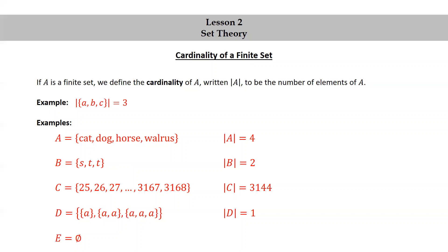As one more example, let E be the empty set. Then the cardinality of E is zero because the empty set has no elements.